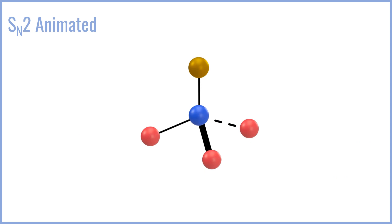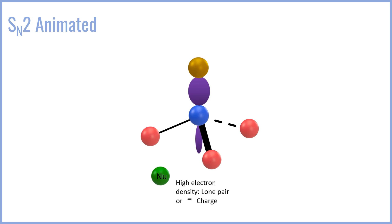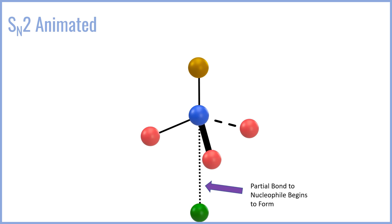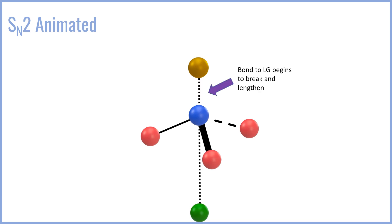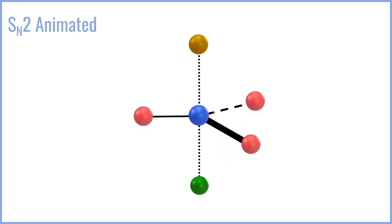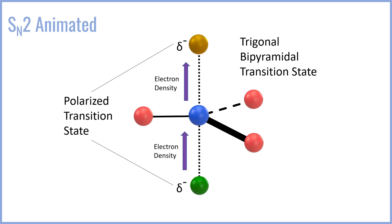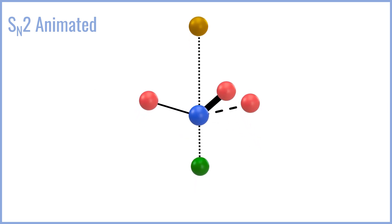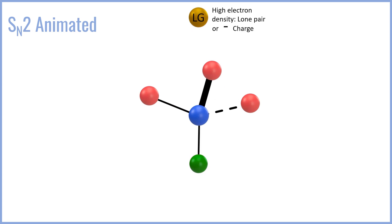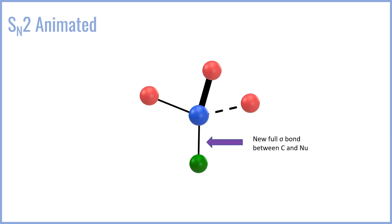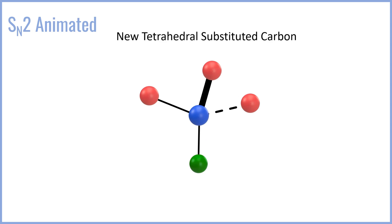Finally, here's a quick animation summarizing the whole SN2 process including stereochemical inversion. We start with the anti-bonding orbital and the nucleophile with high electron density. The nucleophile attacks the back end of the orbital, forming a partial bond in the associative transition state, which begins to break the bond towards the leaving group. The nucleophile pushes all of the atoms into that planar transition state, pushing electron density off onto the leaving group, and eventually breaking the bond to the leaving group completely — leaving a full new bond between the carbon and the nucleophile in the inverted stereochemical position: a new tetrahedral substituted carbon with inverted stereochemistry at the chiral center.